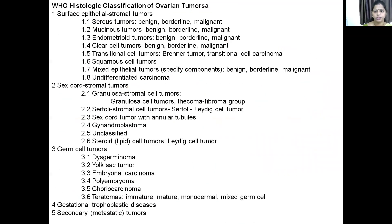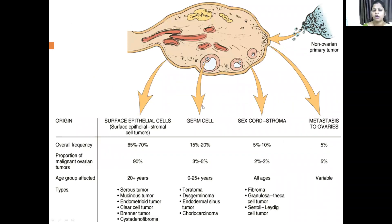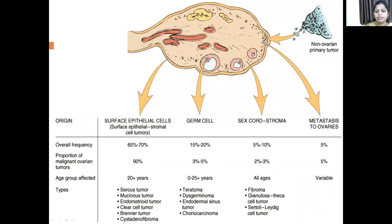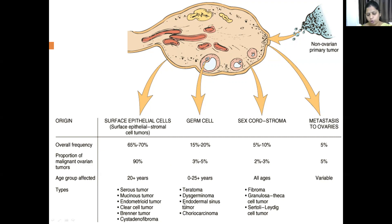Ovarian tumors are classified depending on their cell of origin. If they arise from the surface cells, they are called surface epithelial tumors. They consist of serous tumors, mucinous tumors, endometroid tumors, clear cell tumors, Brenner tumors. If they arise from the sex cord or stroma, they are fibromas, granulosa or thecal cell tumors, or Sertoli-Leydig cell tumors. If they arise from the germ cells, depending on their differentiation, they can be teratoma, dysgerminoma, endodermal sinus tumor, and choriocarcinoma.